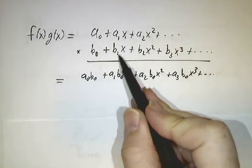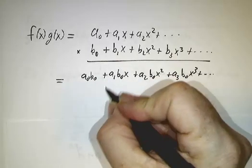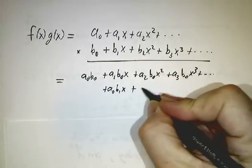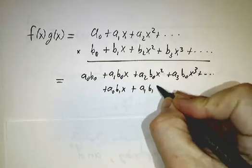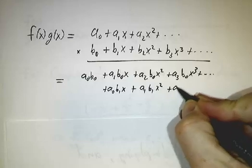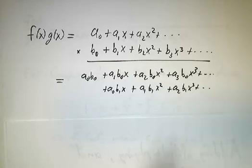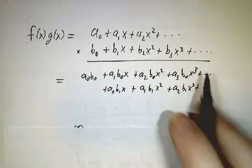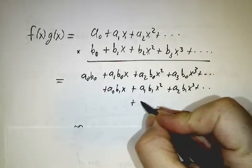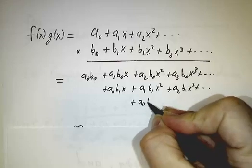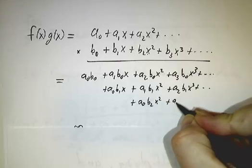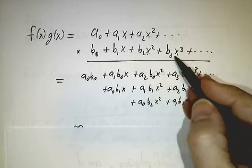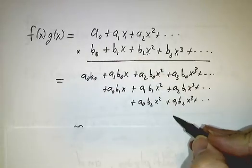Then this times the top, the first term is going to be a0 b1 x, and then a1 b1 x squared, and then a2 b1 x cubed. Then we get a0 b2 x squared, plus a1 b2 x cubed, and then you keep going. You're going to get an x cubed term and so on.